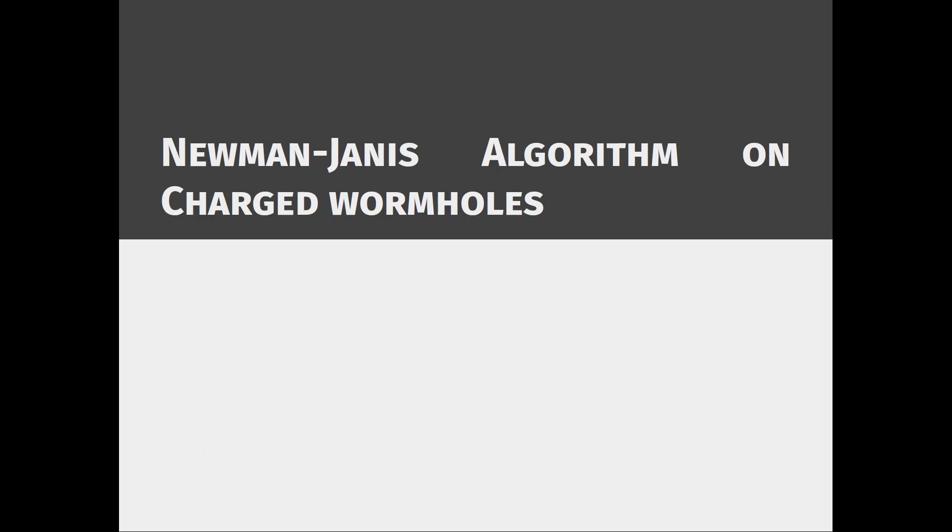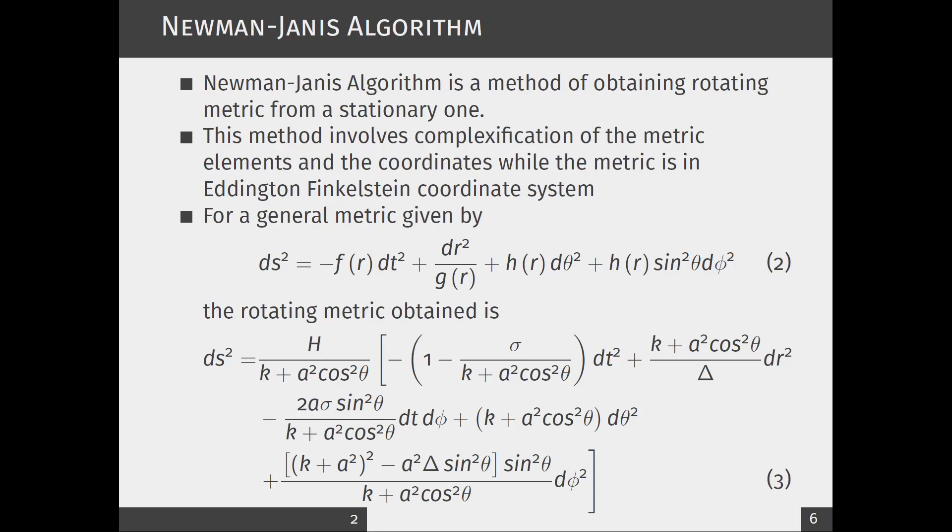Next we can see about the Newman-Janis algorithm on charged wormholes. Newman-Janis algorithm is a method of obtaining a rotating metric from a stationary one. This method involves complexification of the metric elements and the coordinates while the metric is in Eddington-Finkelstein coordinate system.